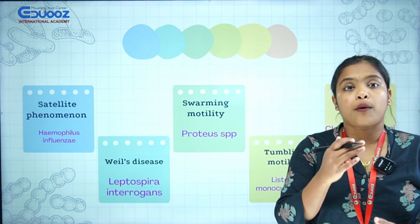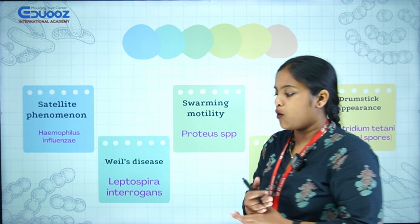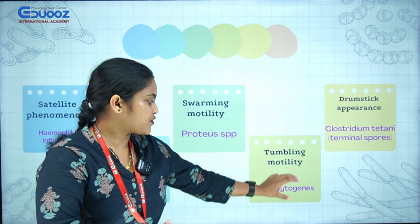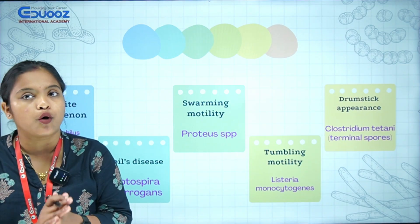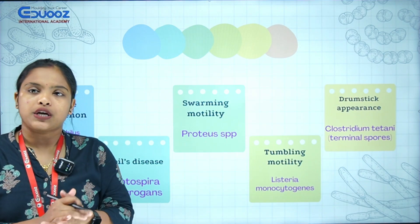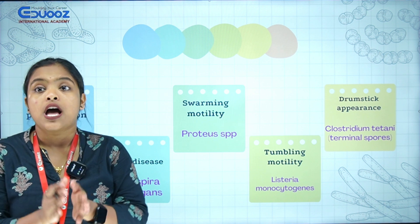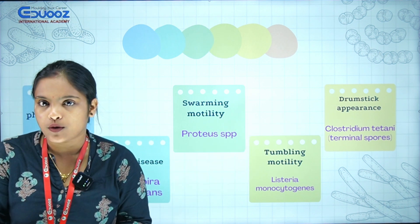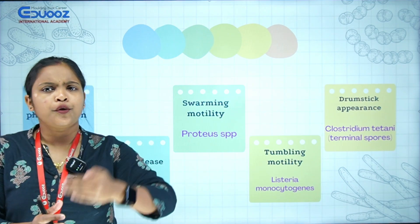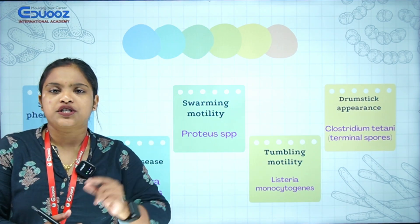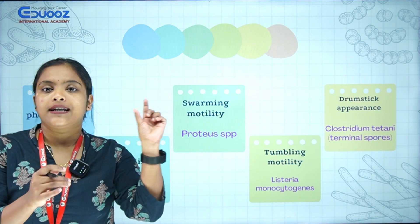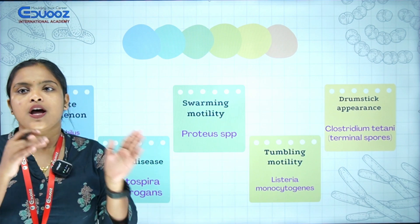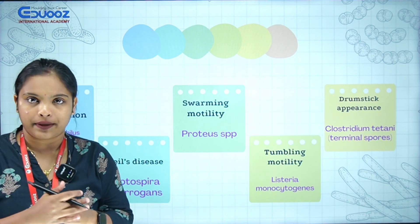Swarming motility — Proteus species shows swarming motility. Tumbling motility — Listeria monocytogenes shows tumbling motility. Drumstick appearance — Clostridium tetani has a drumstick appearance. Terminal spores: there is an oval shape, round spherical shape, terminal, subterminal. Clostridium tetani has terminal spores and drumstick appearance.